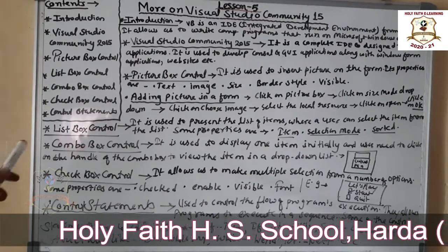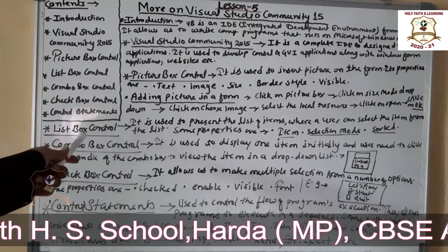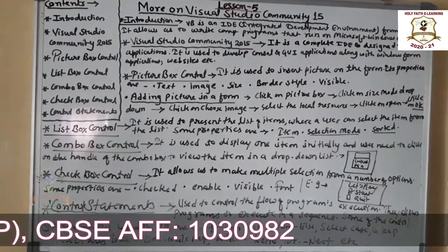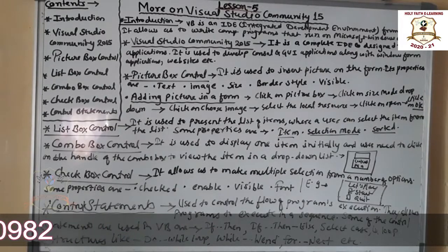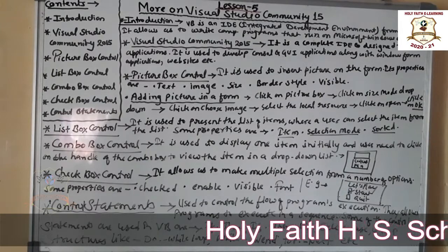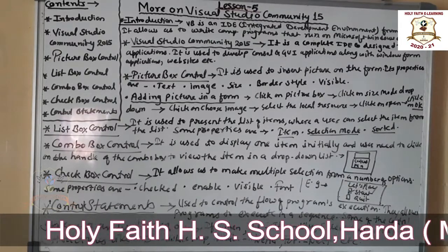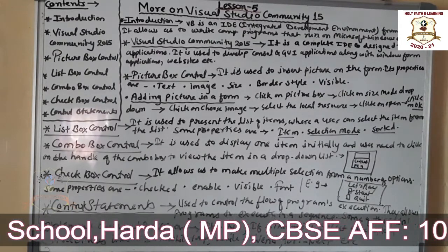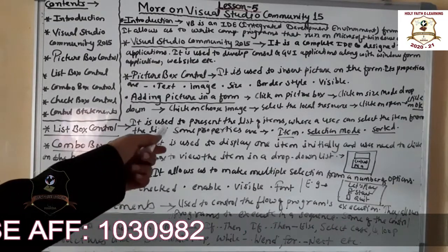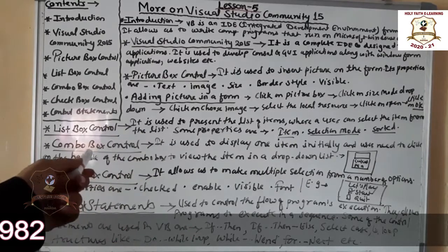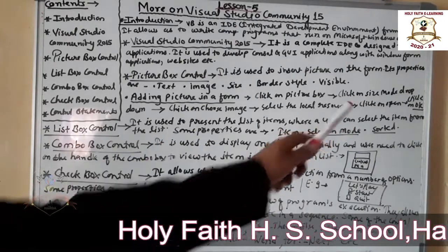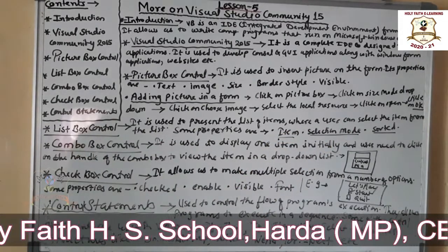The next control is the List Box control. It is used to present a list of items from which a user can select. Key properties include: Items — gets the items of the list box; Selection Mode — sets the manner in which items are selected; and Sorted — determines whether items will be sorted in ascending or descending order.